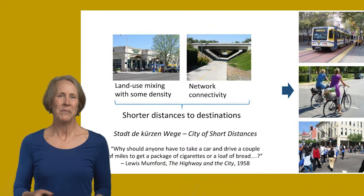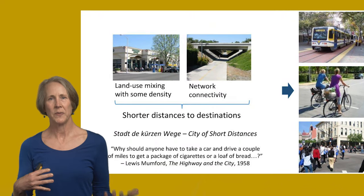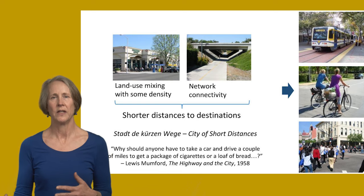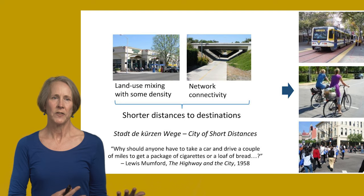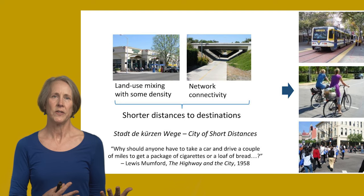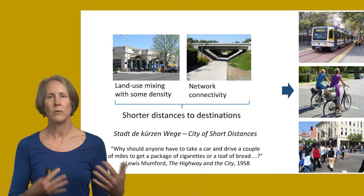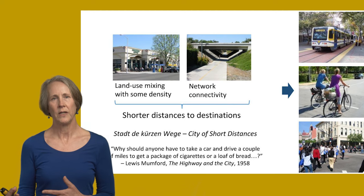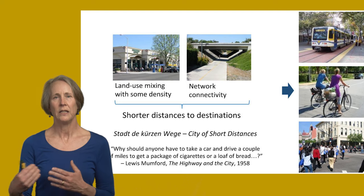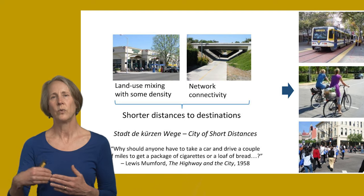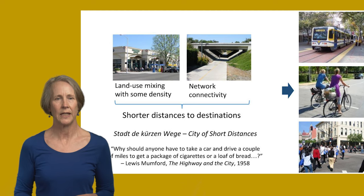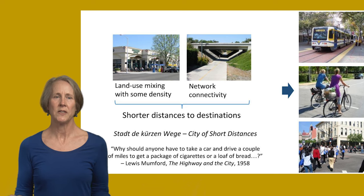So what does it mean to plan for accessibility? Remember that accessibility is determined by proximity and connectivity, so there are two pieces to this. One is to work on proximity, which means mixing land uses and doing so at some reasonable density. It also means thinking about network connectivity and building the important connections in the network that will reduce the distances between home and the various destinations we need to get to. If you do both of these things, you end up with shorter distances to destinations.